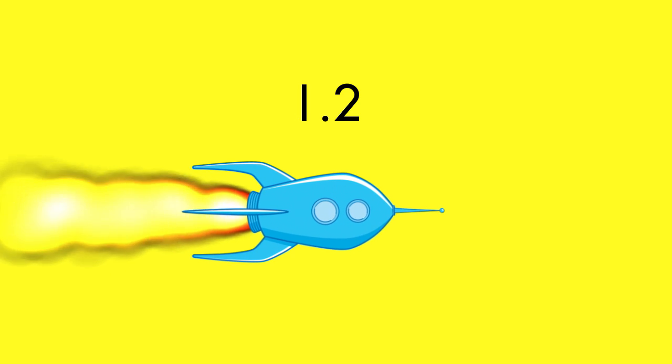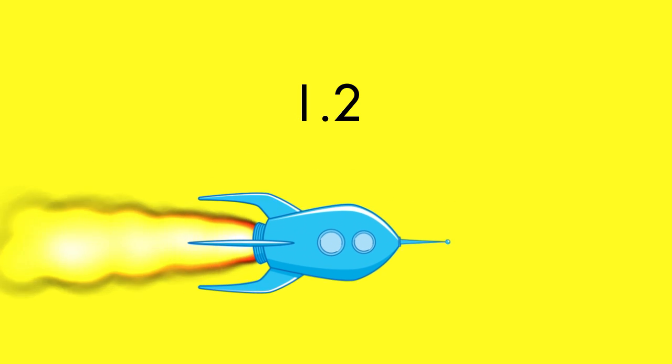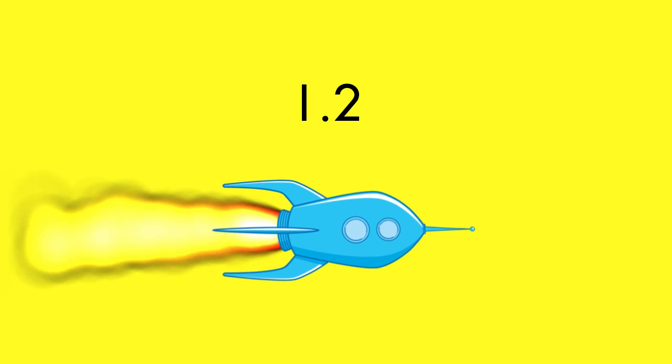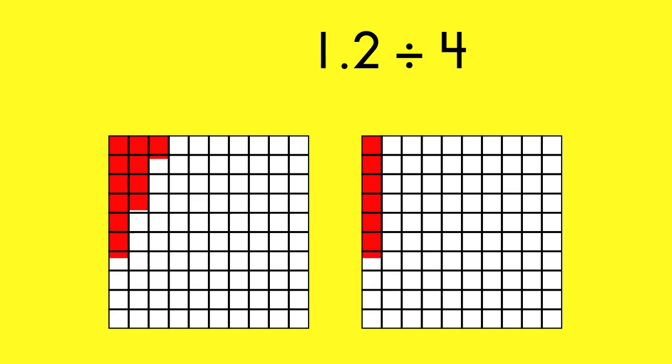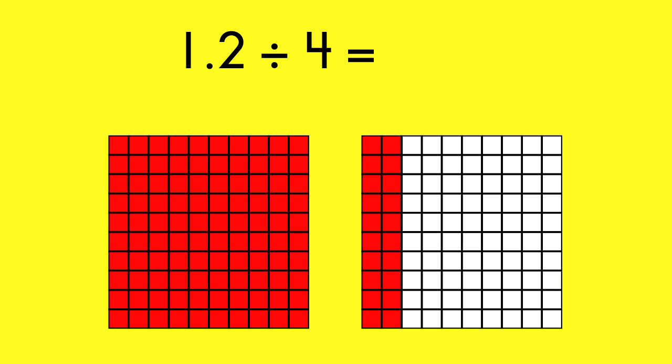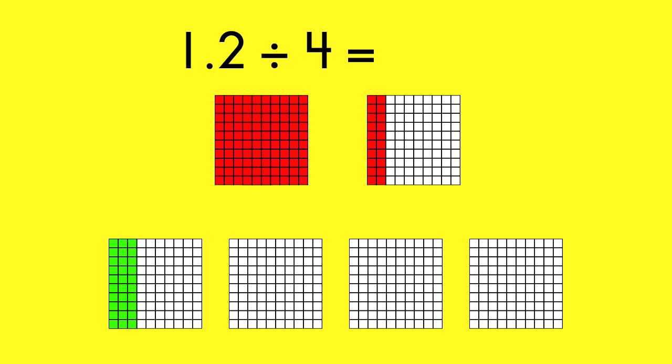Using a visual model can help you solve division equations with decimals. In the far future, a spaceship may travel to Saturn in one and two tenths of a year. Each crew on board will sleep for one fourth of the journey. How much will each crew sleep? Each crew will sleep for three tenths of a year.